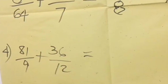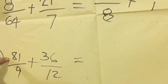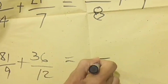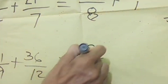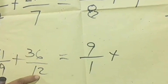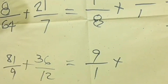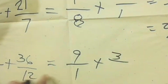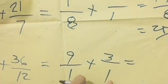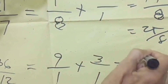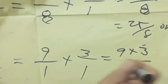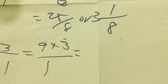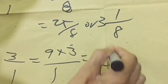Number four: 81/9 plus 36/12. For 81/9, reduce by dividing by 9: 9 divided by 9 equals 1, 81 divided by 9 equals 9, giving 9/1. For 36/12, reduce by dividing by 12: 36 divided by 12 equals 3, 12 divided by 12 equals 1, giving 3/1. Then cross multiply: 9 times 1 equals 9, plus 1 times 3 equals 3. The denominator is 1 times 1 equals 1. Adding 9 plus 3 equals 12, divided by 1. Our answer is 12.